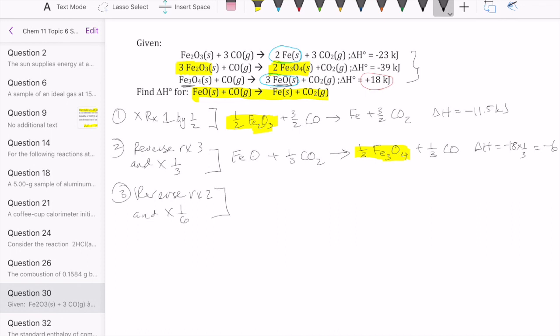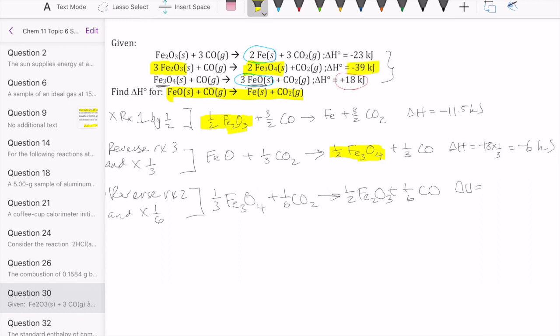1/3 Fe₃O₄ plus 1/6 CO₂ goes to half Fe₂O₃ plus 1/6 CO. And the delta H here is going to be negative 39, but then it's flipped, so it becomes positive 39 and then times 1/6. So that ends up being 6.5 kilojoules.